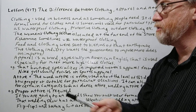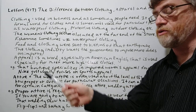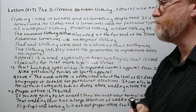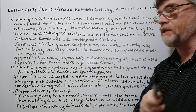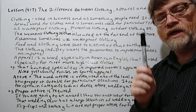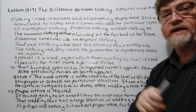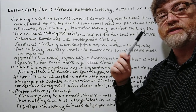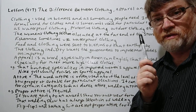Here are some examples: 'The women's clothing section is located at the far end of the store' or 'The children's clothing section is located near the front of the store.' Fishermen sometimes use waterproof clothing. 'Food and clothing were sent to victims of that earthquake' — this is the situation where we use the word clothing for clothes that somebody needs. If you're just talking about your regular wardrobe, people usually just use the word clothes most often.